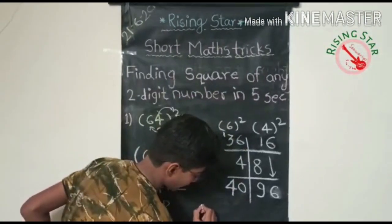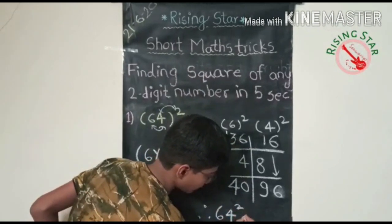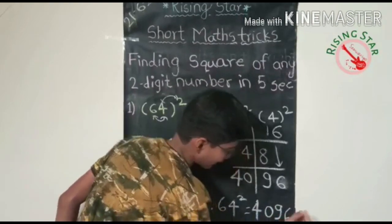So the square of sixty-four will be four thousand ninety-six.